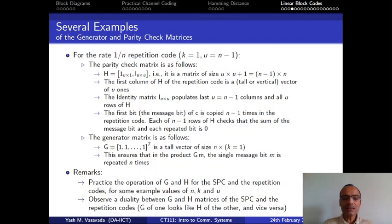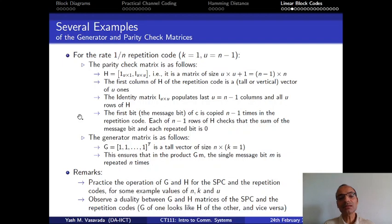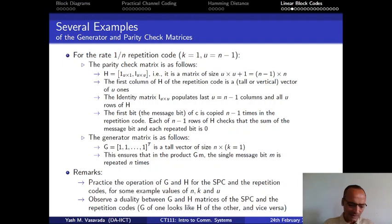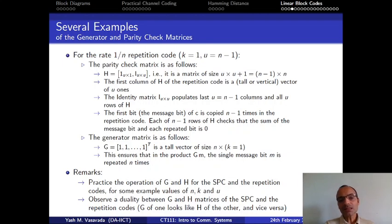Both the H matrix for SPC and the G matrix for the repetition code are simply vectors full of ones. So in some fundamental sense, SPC and repetition codes are duals of each other — you can take the G matrix for one and almost directly use it as the H matrix for the other, and vice versa. This duality between codes is an important and quite interesting observation that emerges when we view channel coding through the lens of linear algebra.